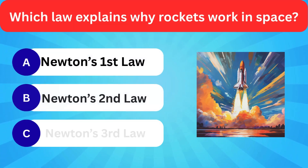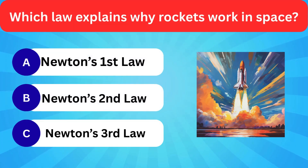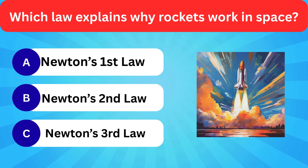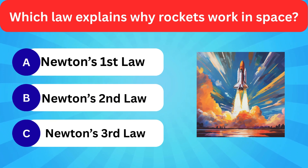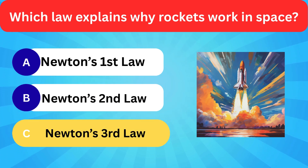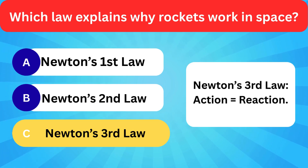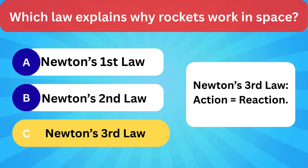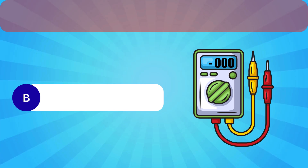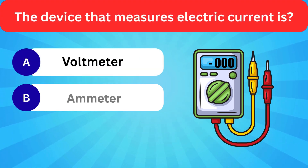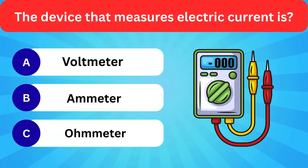Which law explains why rockets work in space? Options: Newton's first law, Newton's second law, Newton's third law. Correct answer is Newton's third law — action equals reaction. The device that measures electric current is?